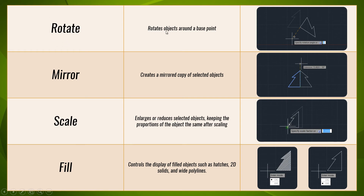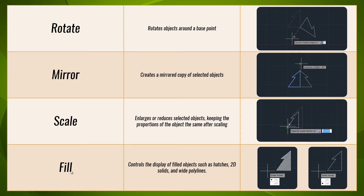Rotate command is used to rotate the object at a particular angle. It helps you to align the object according to the way you need. Mirror command helps you to mirror the object by reducing the time to design. Scale command is very useful and essential while designing complex drawings. It helps you to scale your drawings upwards or downwards according to your requirement. Scale command is used widely by civil engineers as well as mechanical engineers to scale their drawings according to the size — it can be 1 is to 1 or 1 is to 10. The scale factor is the essential parameter you have to input to scale an object. Fill is a system parameter which enables you to display filled objects such as Hatch or 2D solids. You can make it on and off manually whenever you need.